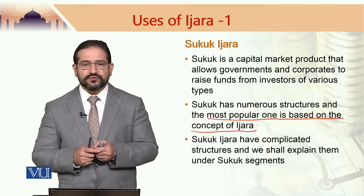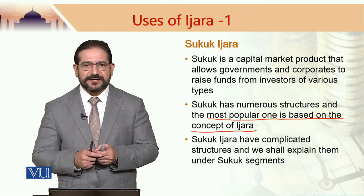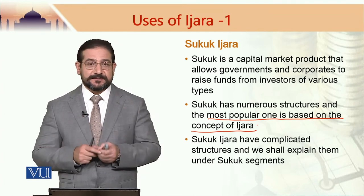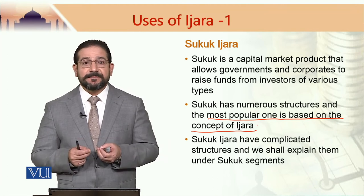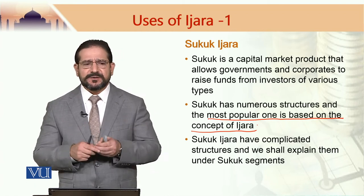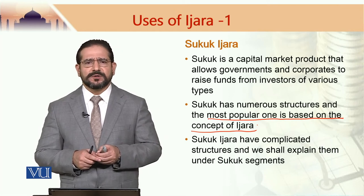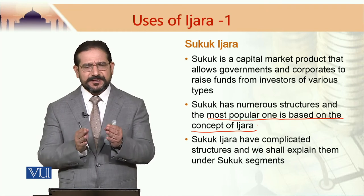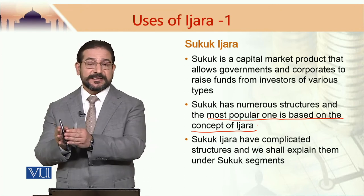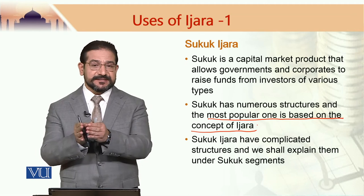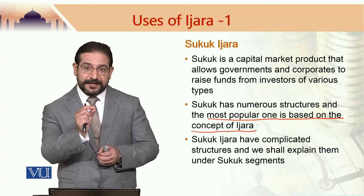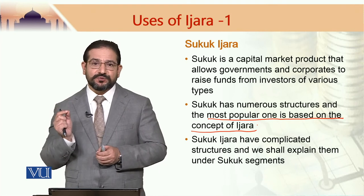To exemplify it, let me refer to the Sukuk Ijara issued by the government of Pakistan quite a few years back. In that case, the government identified an asset — that asset was the M2 motorway. That M2 motorway was sold to an SPV, which was called Pakistan International Sukuk Company Limited. The government's National Highway Authority sold M2 to that SPV, and that SPV leased the motorway back to the National Highway Authority. The rentals paid to the SPV were then passed on to the investors.